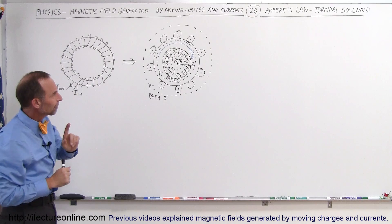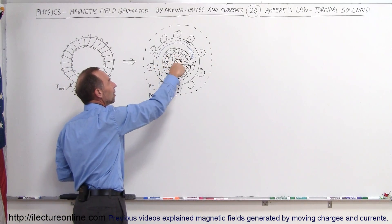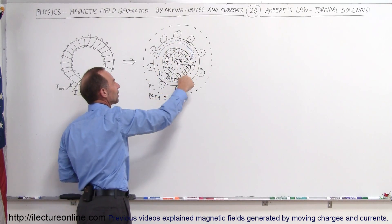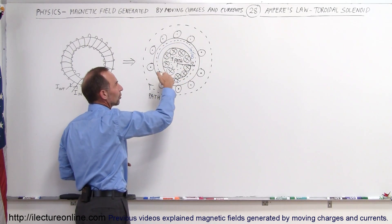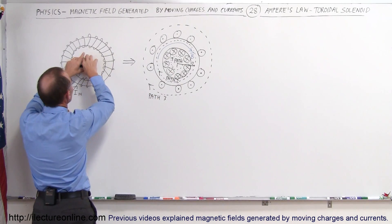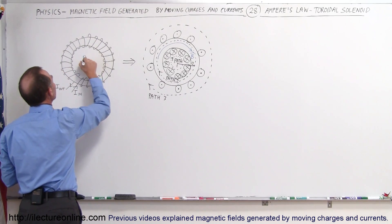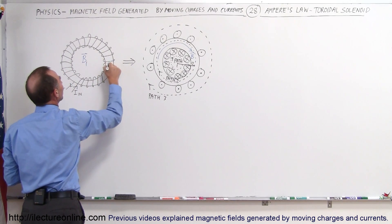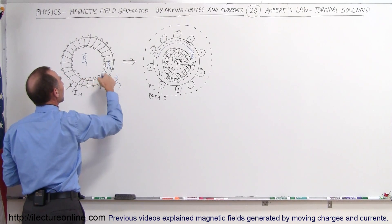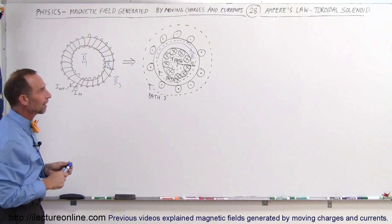What we're trying to find is the magnetic field at the center of the toroidal solenoid, inside the toroid, and outside it. We're going to find B1 (at the very center), B2 (inside the solenoid), and B3 (outside the solenoid).